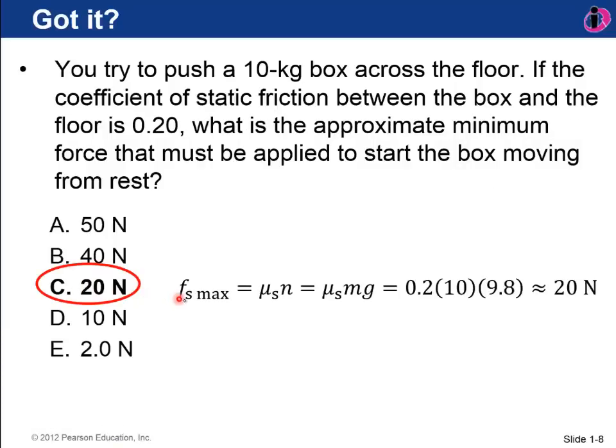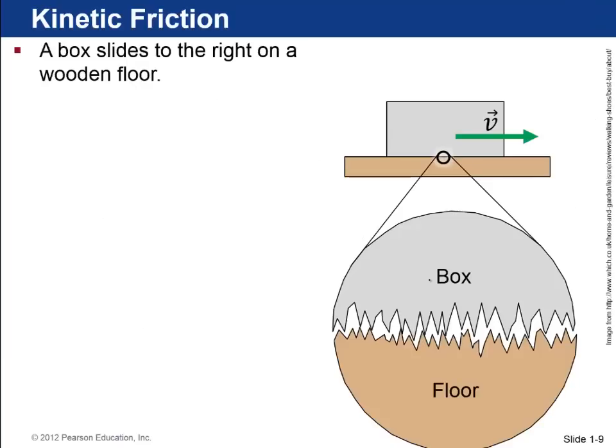Okay, so the answer was 20 newtons, and the way I got that is I used the equation Fs max is mu sub s times n. And now, if you think about the free body diagram of the box, there's a normal force pressing up, and there's a gravity force pressing down. Those are the only vertical forces on this, and since F net in the y direction is equal to 0, because it's not accelerating up or down, that means that the normal force in this case is just equal to mg. So it's mu sub s times mg, so that's 0.2 times 10 kilograms times 9.8. That's approximately 20 newtons.